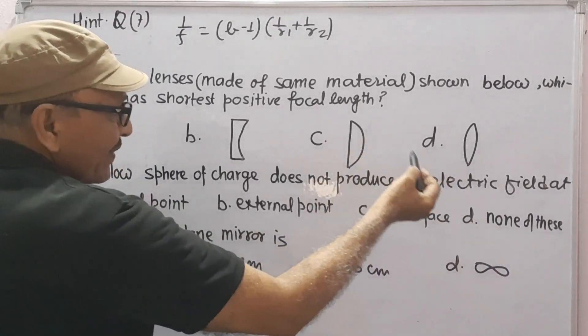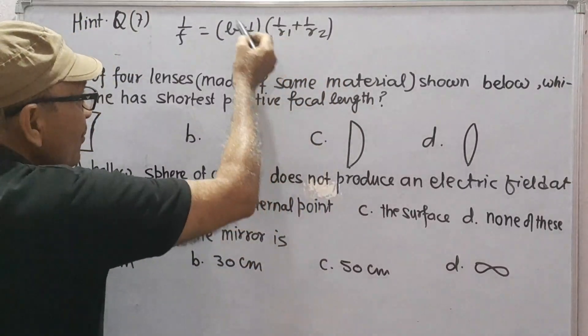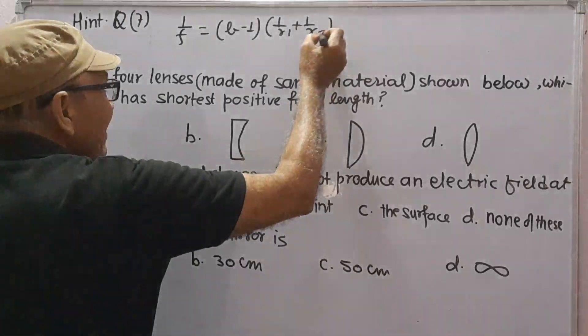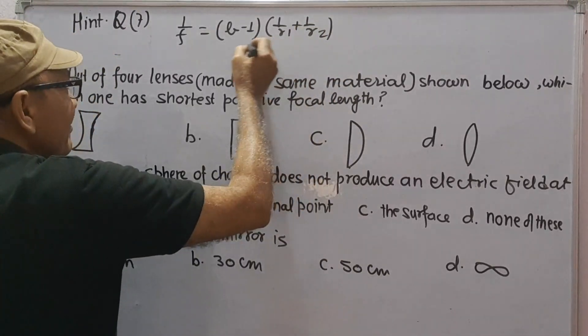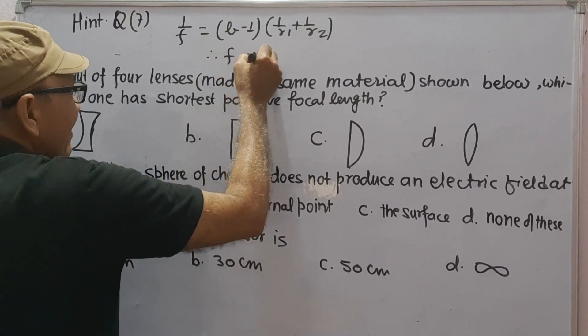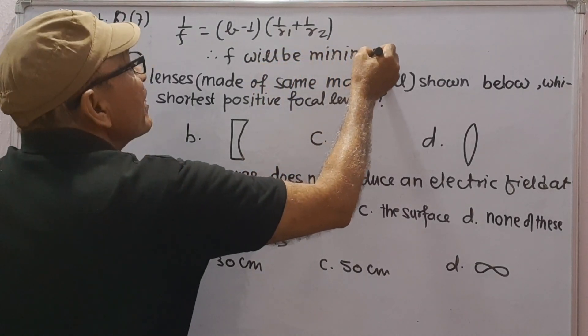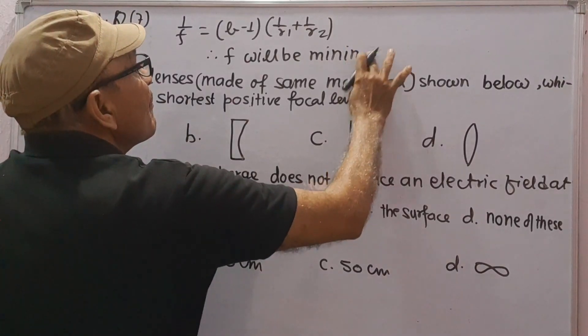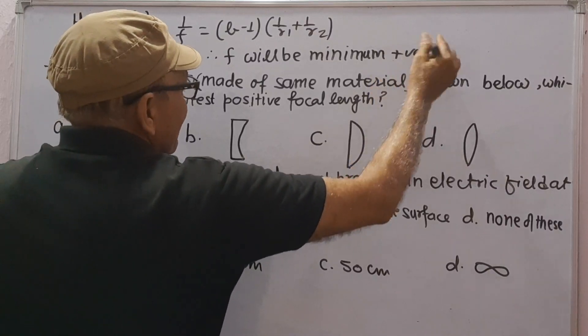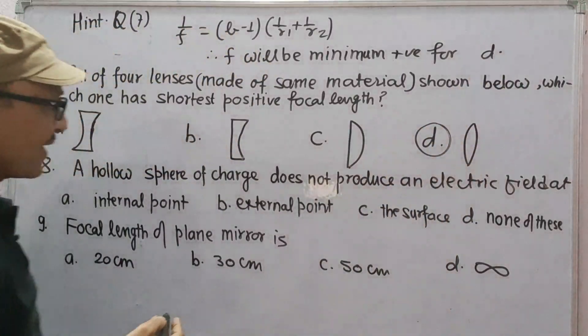In option D, 1 upon R1 plus 1 upon R2 into mu minus 1 gives maximum value, and therefore focal length will be minimum. Therefore F will be minimum positive for option D. So the correct option will be D.